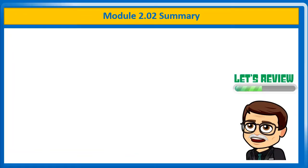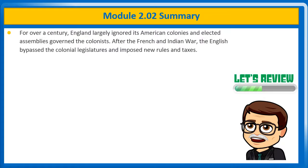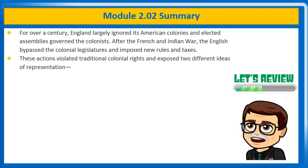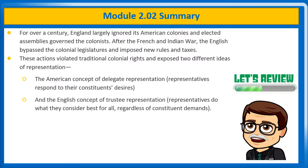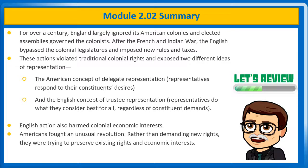So let's review. For over a century, England largely ignored its American colonies and elected assemblies governed the colonists. After the French and Indian War, the English bypassed the colonial legislatures and imposed new rules and taxes. These actions violated traditional colonial rights and exposed two different ideas of representation: the American concept of delegate representation, where representatives respond to their constituents' desires, and the English concept of trustee representation, where representatives do what they consider best for all regardless of constituent demands. English actions also harmed colonial economic interests. Americans fought an unusual revolution — rather than demanding new rights, they were trying to preserve existing rights and economic interests.